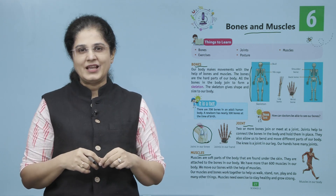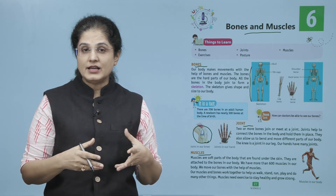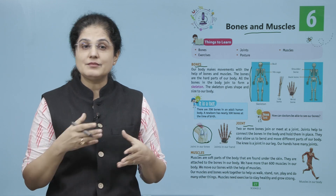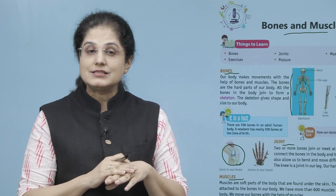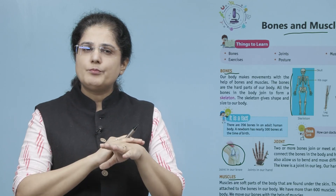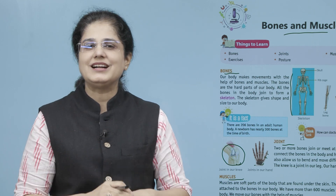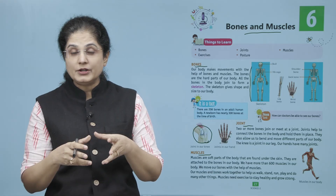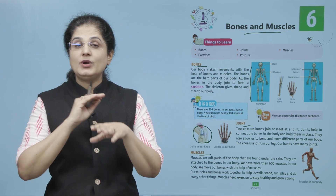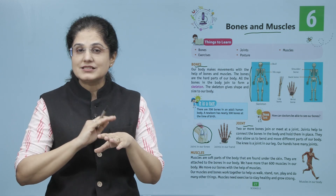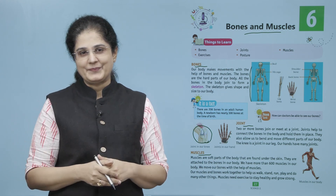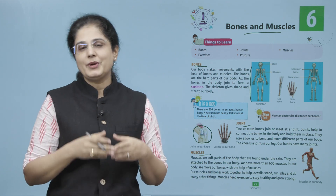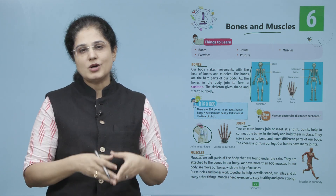ہماری skin کے نیچے جو بڑا soft اور fleshy سا part ہے اسے muscles کہتے ہیں۔ ہماری body کے اندر 600 سے زیادہ muscles ہوتے ہیں۔ یہ muscles bones کے ساتھ attached ہوتے ہیں اور ہماری bones کی جو movement ہوتی ہے وہ انہی muscles کی وجہ سے ہو پاتی ہے۔